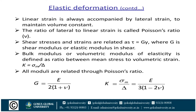Linear strain is always accompanied by lateral strain. Poisson's ratio is defined as the ratio of lateral strain to linear strain. Volumetric strain is the ratio of change in volume to original volume: delta V divided by V. Bulk modulus is defined as: when a body is subjected to three mutually perpendicular stresses of equal intensity, the ratio of direct stress to the corresponding volumetric strain is the bulk modulus. The relationships are: G equals E divided by 2(1 + v), and K equals E divided by 3(1 − 2v).